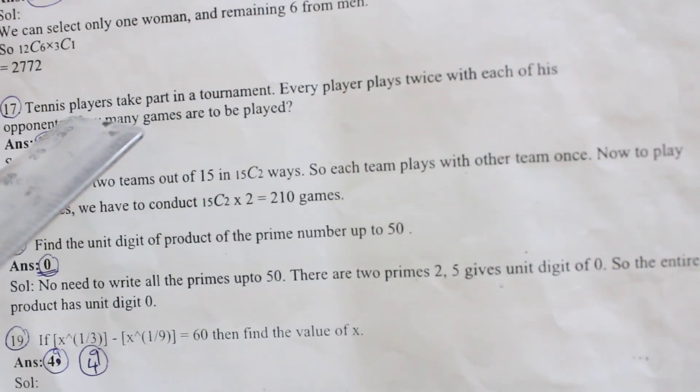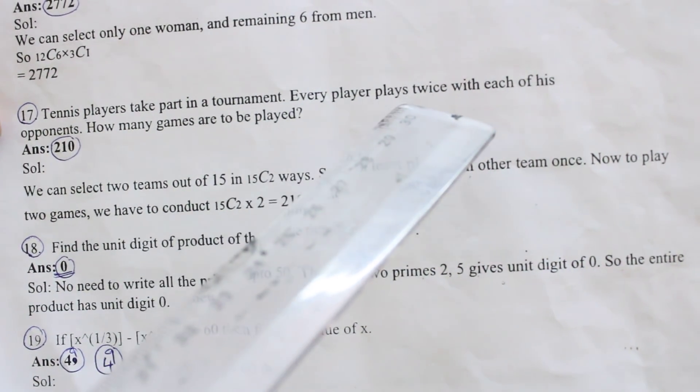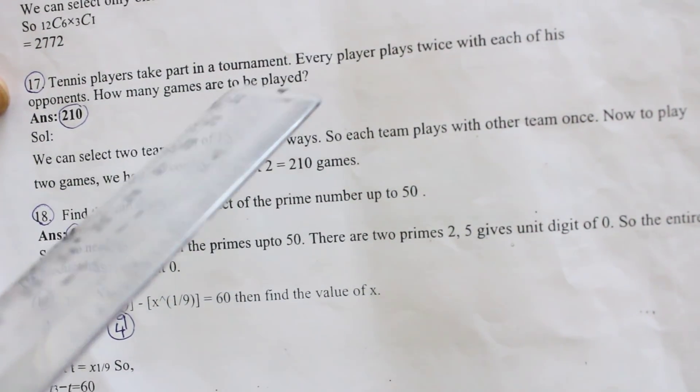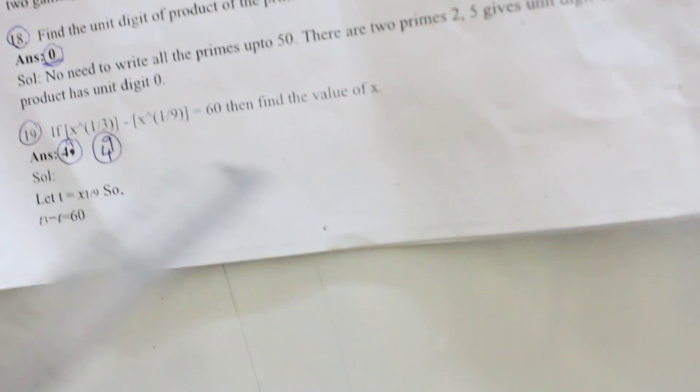17th one: Tennis players take part in a tournament. Every player plays twice with each of his opponent. How many games are to be played? 210, answer is 210.